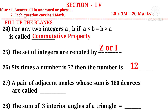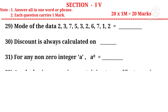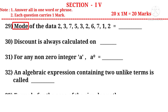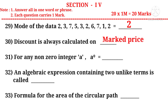Question 27: A pair of adjacent angles whose sum is 180 degrees are called a linear pair of angles. Question 28: The sum of three interior angles of a triangle is equal to 180 degrees. Question 29: Mode of the data — the number 2 appears 3 times, more than any other item, so the mode is 2. Question 30: Discount is always calculated on marked price. Question 31: For any non-zero integer A, A power 0 is equal to 1. Question 32: An algebraic expression containing two unlike terms is called a binomial.